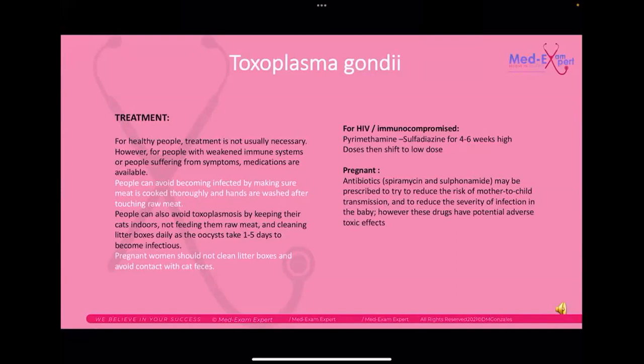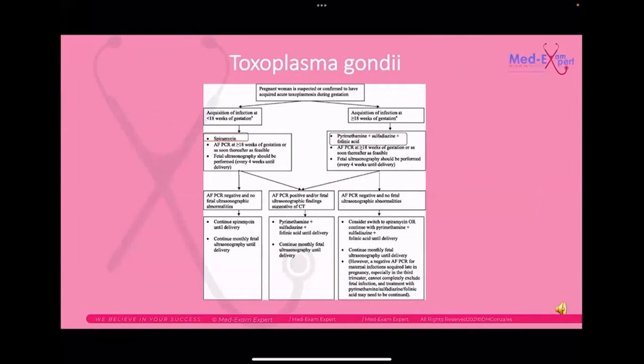For pregnant women, the treatment options are spiramycin and sulfonamide. These drugs only reduce the severity of infection — they don't eliminate it, especially if started late in the trimester. According to the management algorithm: if a pregnant woman is suspected of having acute toxoplasmosis and is less than 18 weeks gestation, start spiramycin; if more than 18 weeks, start pyrimethamine, sulfadiazine, and folinic acid.